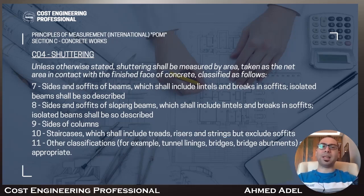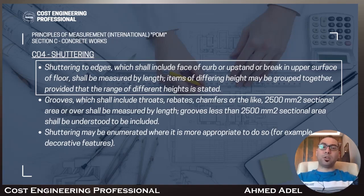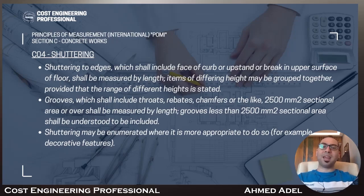Number eleven: other classifications — for example, tunnel lining, bridges, and bridge abutments — as may be appropriate. These are all the shuttering items you will have in your BOQ under formwork. After that, shuttering to edges — which shall include face of curb, upstand, or break in upper surface of floor — shall be measured by length. Items of differing height may be grouped together provided the range of different heights is stated, for example 50 mm to 250 mm.